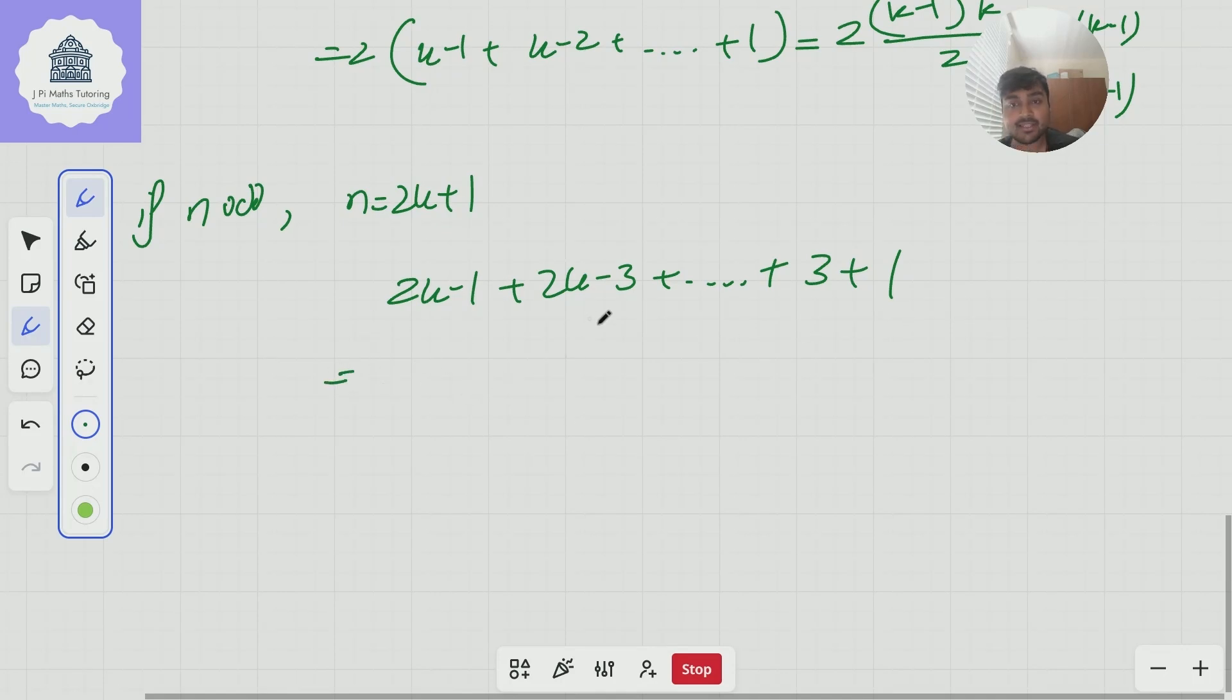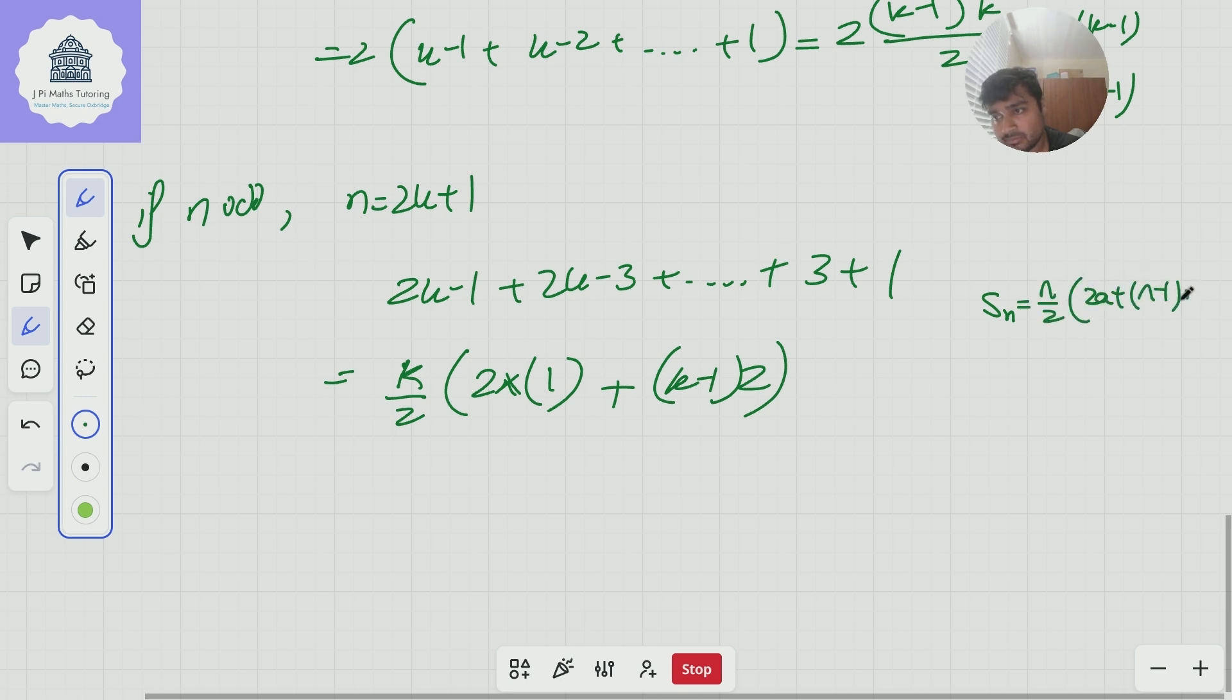How many terms are there here? Well there's precisely k of them. Let me just double check that. Yes there's going to be k terms here so it's going to be k over two times two times let's start from this side so two times a two times one plus n minus one times d so k minus one times the difference here which is two. So here I've just used the formula for an arithmetic sum like so.